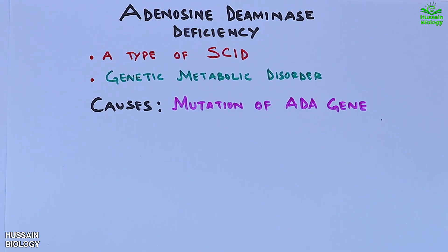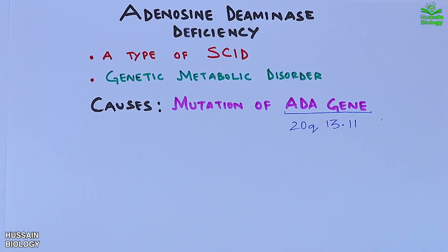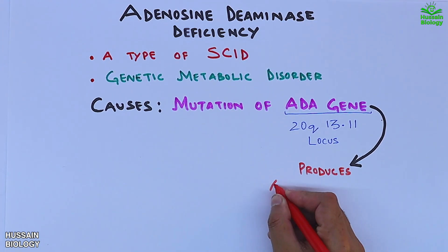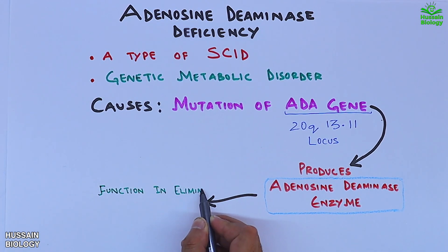If we see its locus, it's at 20q13.11. This ADA gene produces adenosine deaminase enzyme, and this enzyme is important to eliminate adenosine and deoxyadenosine.